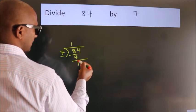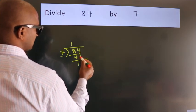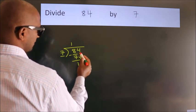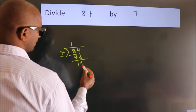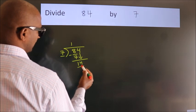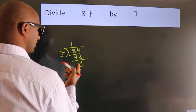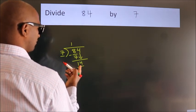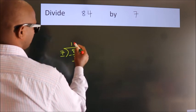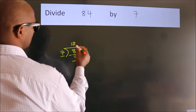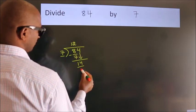After this, bring down the beside number. So 4 comes down, giving us 14. When do we get 14 in the 7 table? 7 twos are 14.